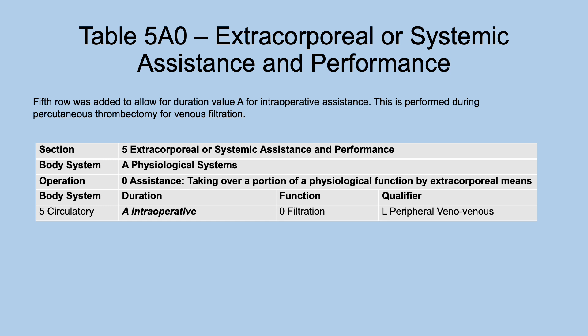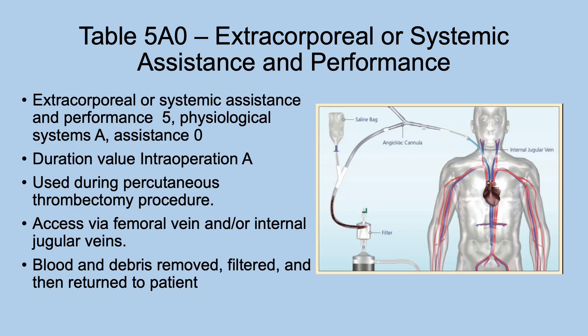Let's move out of the medical and surgical section to table 5A0 — extracorporeal or systemic assistance and performance. A fifth row has been added for physiological assistance with a new duration value: intraoperative. This is used for venous filtration during a percutaneous thrombectomy procedure, accessing from either the femoral vein or the jugular vein. Blood and debris are removed, filtered, and returned to the patient — so of course this is intraoperative, and it's reported in addition to the thrombectomy procedure.